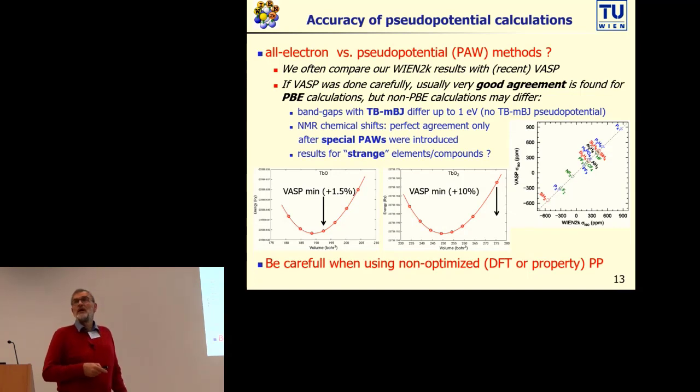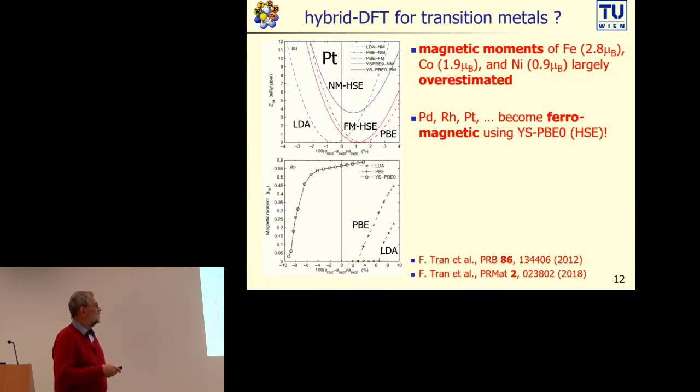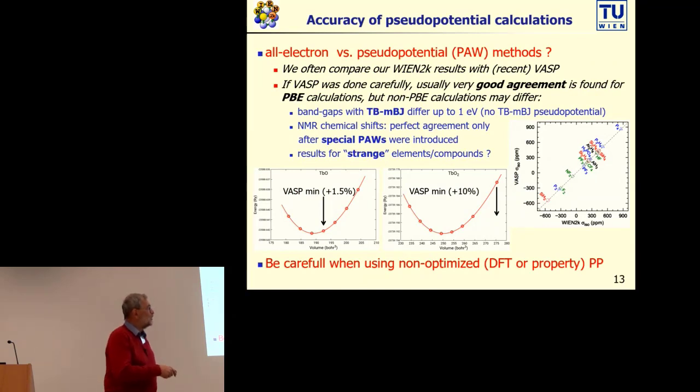Also, there is of course a problem sometimes with VASP if you look at strange elements or compounds. One example which we just recently encountered: terbium oxide, Tb4O7, in sodium chloride structure, the VASP minimum and the Wien2k minimum differ just one percent in volume, which I would still call acceptable. But a very similar compound, TbO2, the VASP minimum is 10 percent off, and we don't really know why. But it seems that the transferability of a 2+ and 4+ ion for the 4f system simply is not given in this case. So this means be careful when using non-optimized pseudopotentials or non-optimized either for a particular DFT or for a particular property.